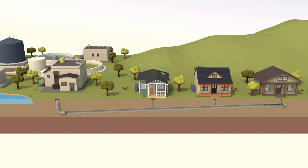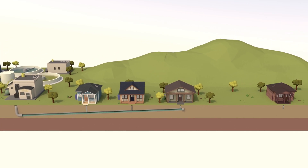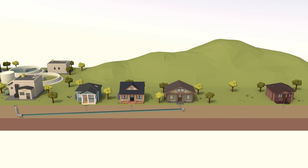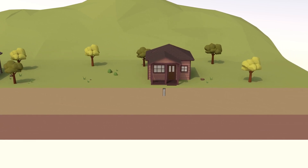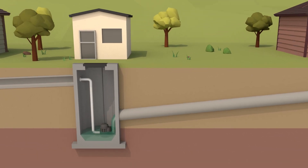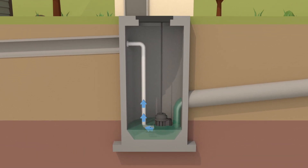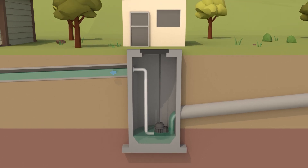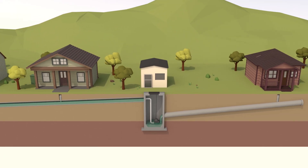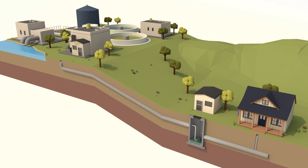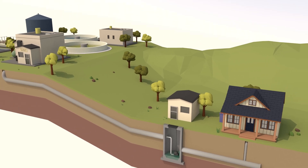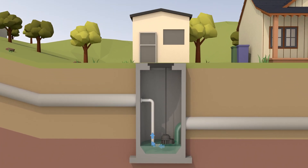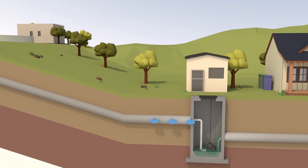The water flows to the treatment facility primarily by gravity. But what happens if sewer lines have to travel a great distance, which would require the lines to be buried too deep? Lift stations help bridge the gap by lifting the wastewater to a higher elevation and allowing the flow by gravity to continue. If the treatment facility is at a higher elevation than the source of the wastewater, a lift station will pump the wastewater to that higher elevation.